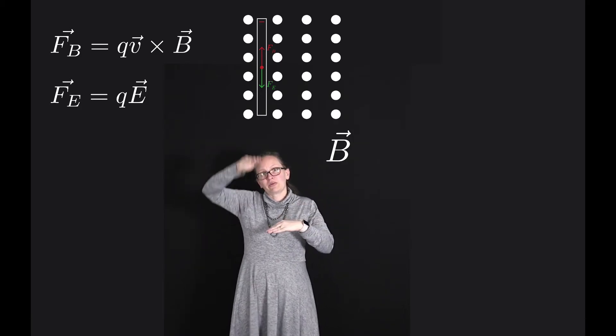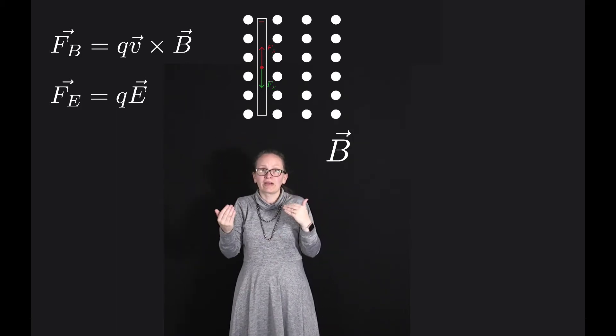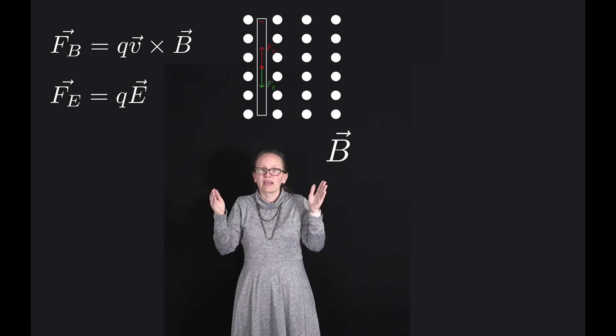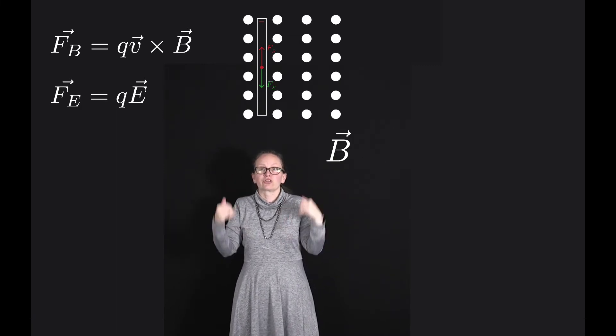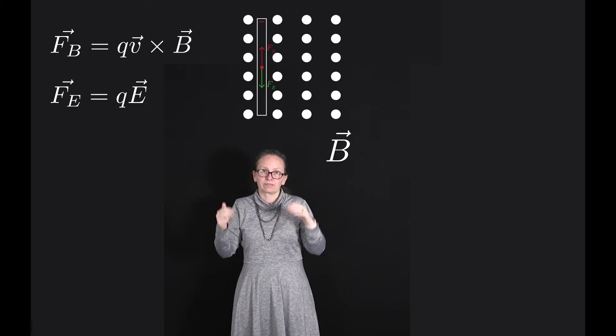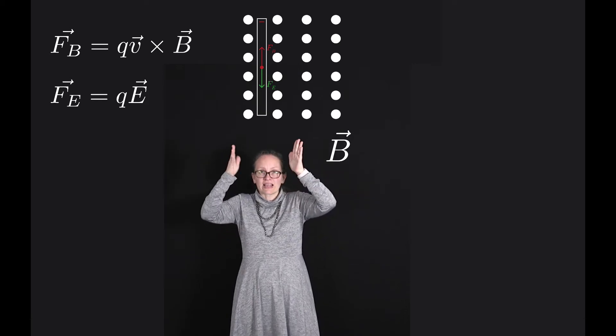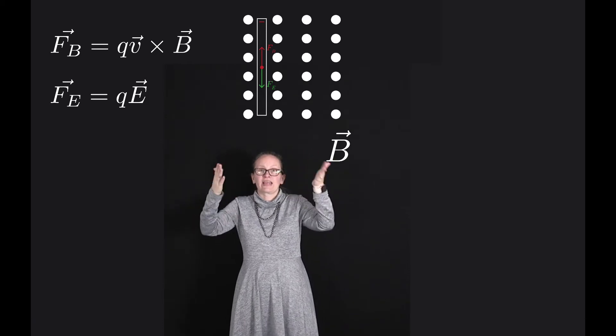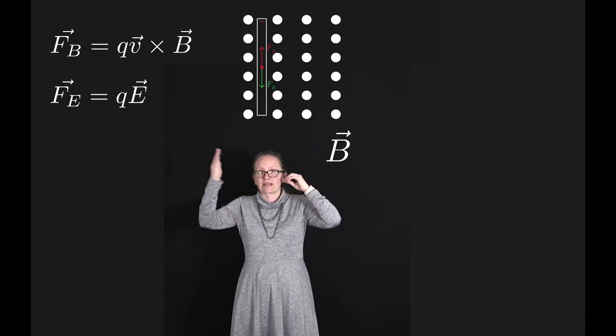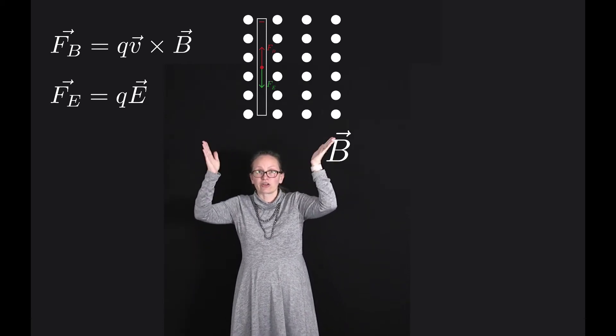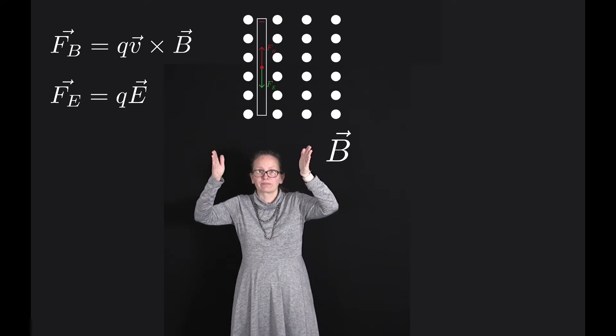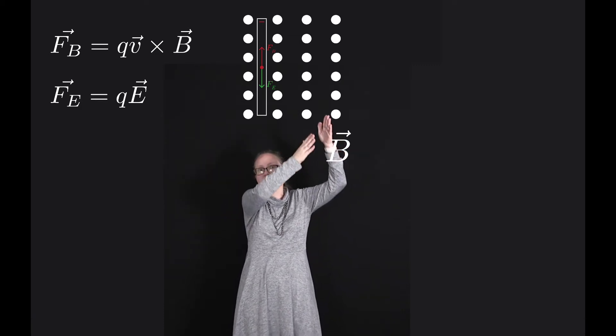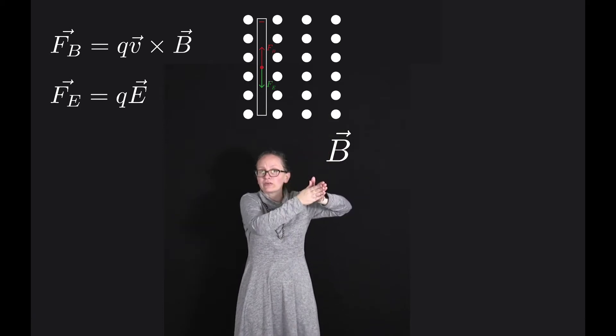However, as they were moving upwards, we would temporarily measure a current flowing in the opposite direction to the flow of electrons. So once our wire is now completely within that magnetic field, we've got the case where we've now got an electric and magnetic force balanced so the electrons are no longer moving and there is no current.